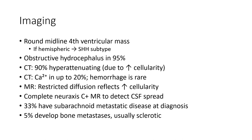Diffusion restriction may reflect high cellularity. Complete neuraxis MRI with contrast is required to detect CSF spread. 33% have subarachnoid metastatic disease at diagnosis. 5% develop bony metastases, which are typically sclerotic.